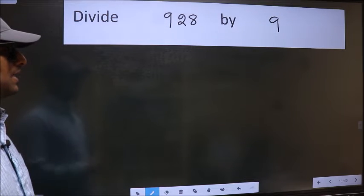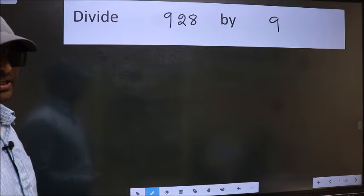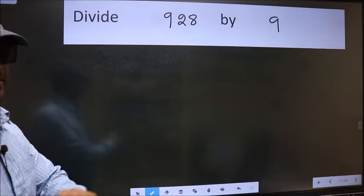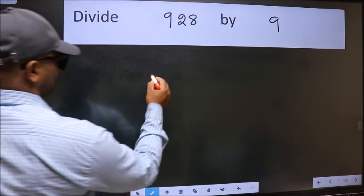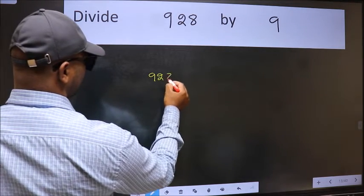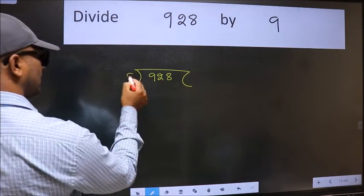Divide 928 by 9. To do this division, we should frame it in this way. 928 here and 9 here.